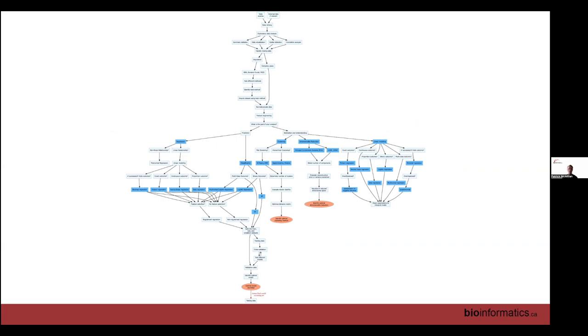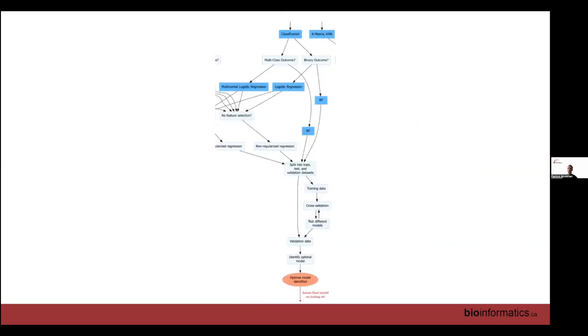So taking us back to the overall decision tree, pretty big, pretty messy. But where we're focusing on is this area right here. So the classification branch, so there are different types of classification in terms of is the outcome multiclass, is it binary, and then there are different methods that you can use from there. And then typically, the way that you would address assessing the model is by splitting the training set into train and validation to identify an optimal model, and then using the best model from the validation set to apply onto the testing set.